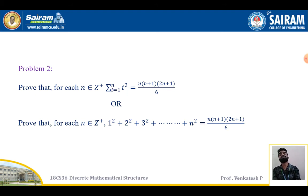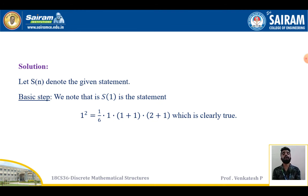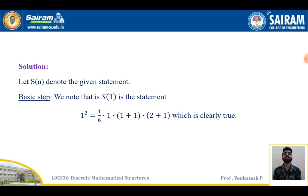Problem number two: prove that for each n ∈ Z+, the summation of i² from i=1 to n equals n(n+1)(2n+1)/6. Expanding this: 1² + 2² + 3² + ... + n² = n · (n+1) · (2n+1) / 6. We take the statement S(n): 1² + 2² + 3² + ... + n² = n · (n+1) · (2n+1) / 6.